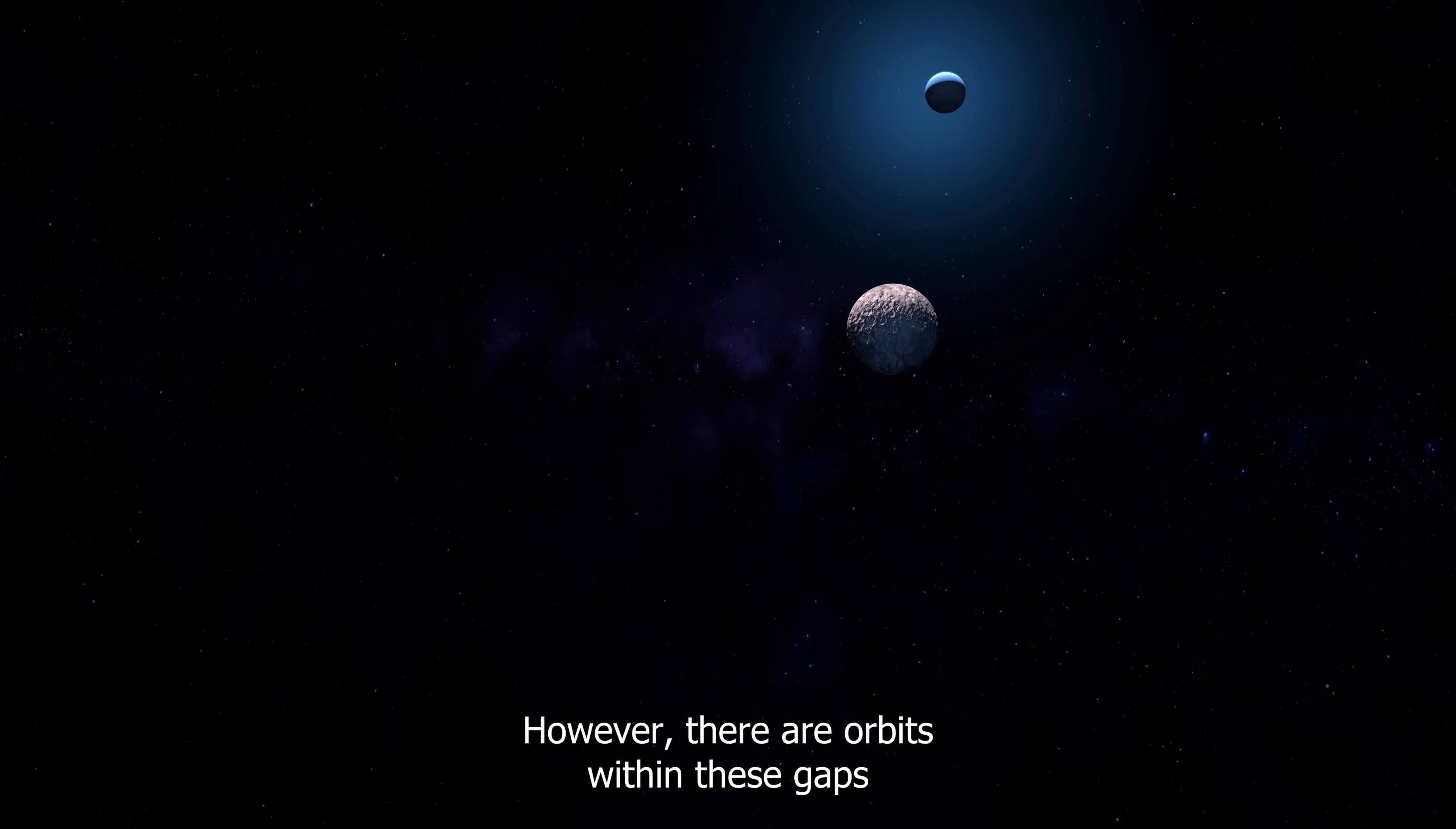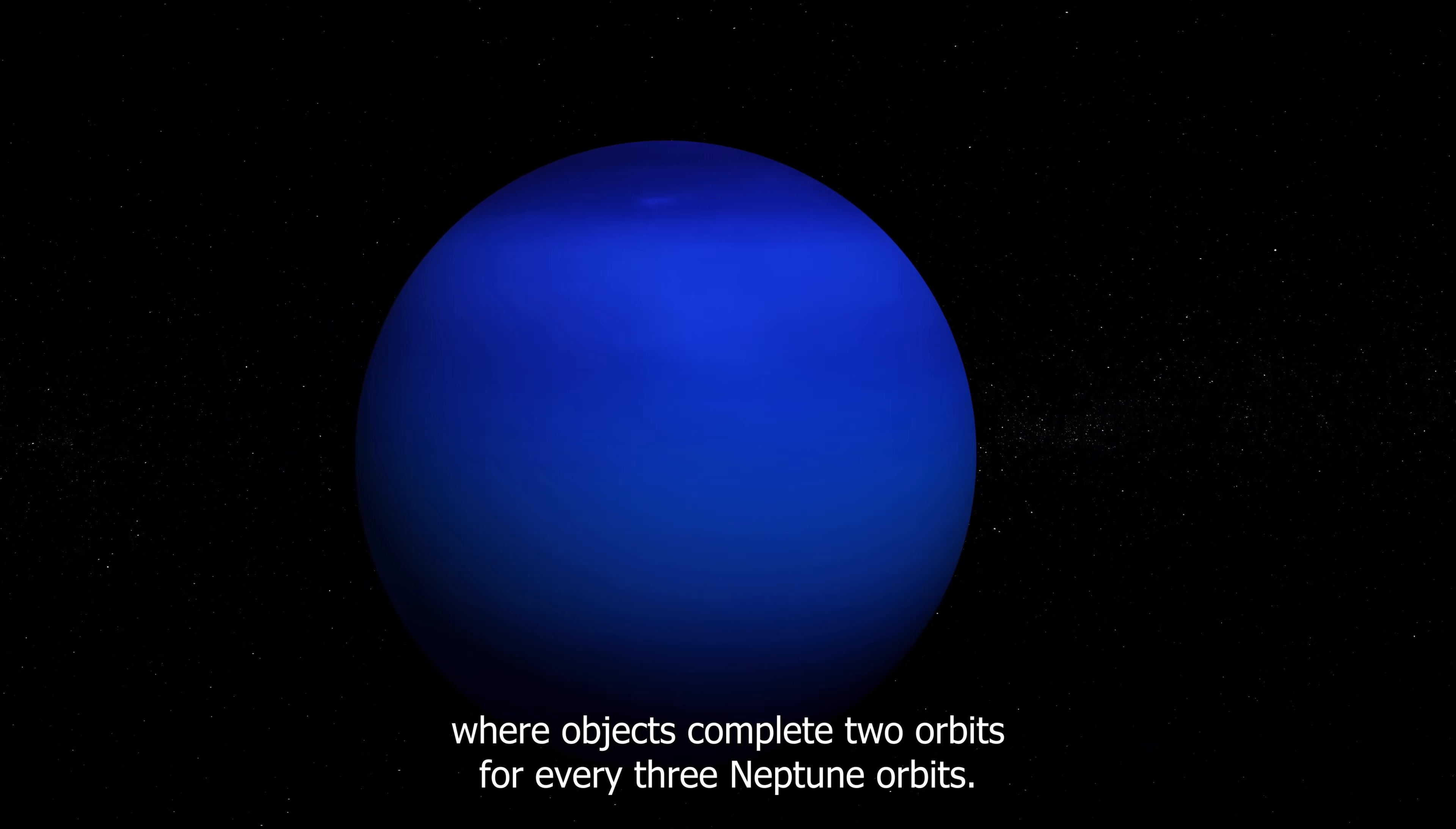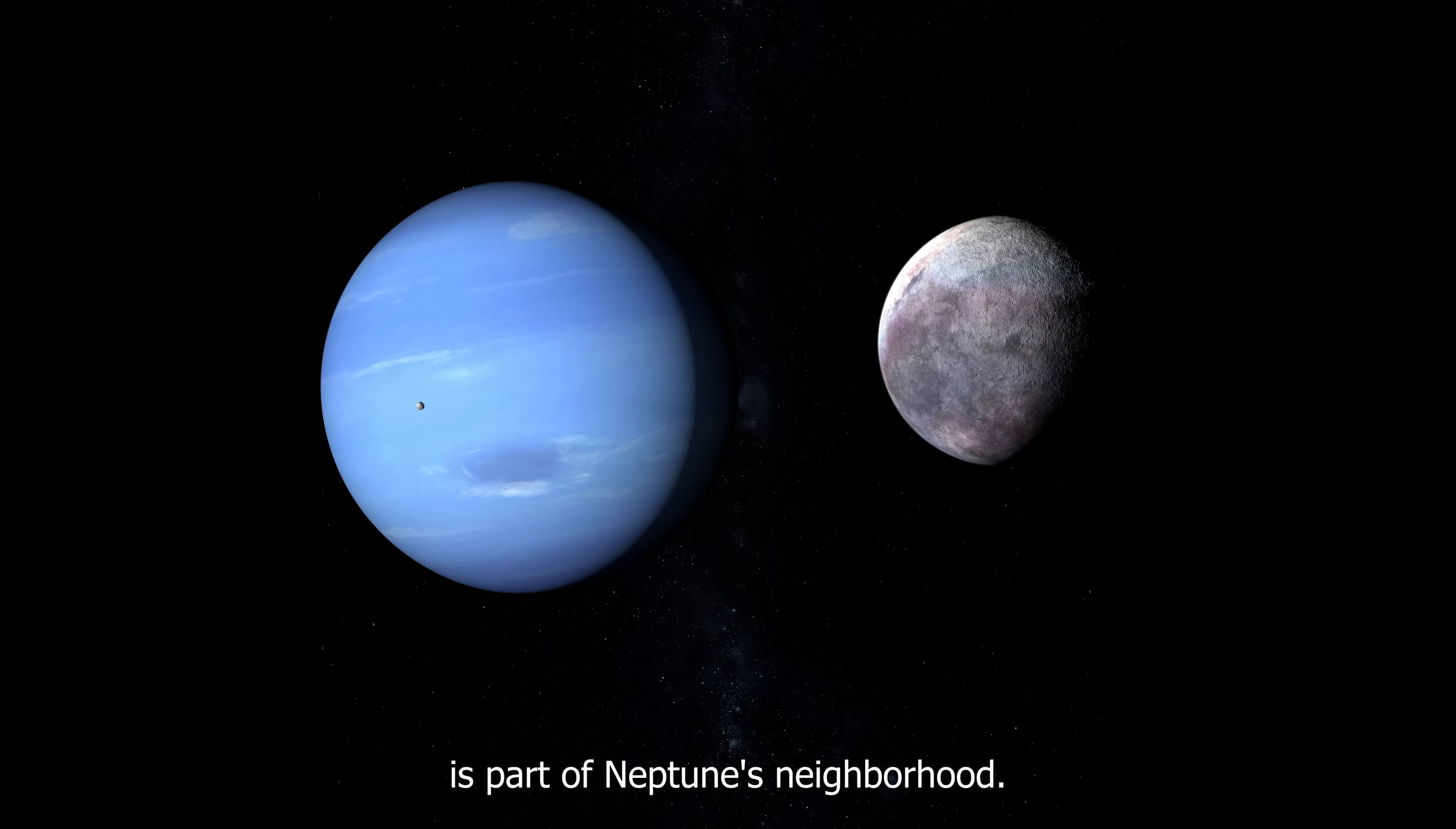However, there are orbits within these gaps where objects can survive for the age of the solar system. These orbits happen when Neptune's orbital period is a precise fraction of the object's orbital period, like the two-three resonance, where objects complete two orbits for every three Neptune orbits. This particular resonance, known as Plutinos, has over 200 known objects in the Kuiper belt. This happens because Pluto, the largest object in the Kuiper belt, is part of Neptune's neighborhood.